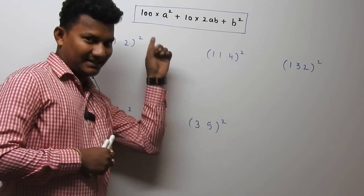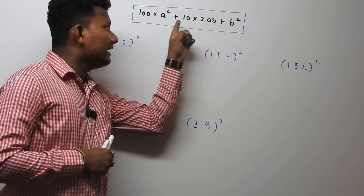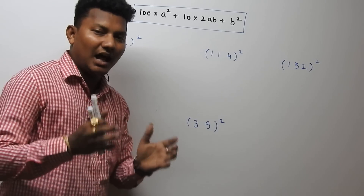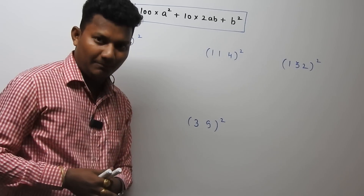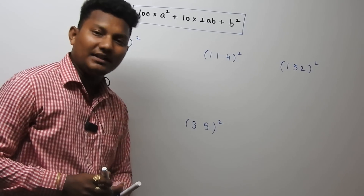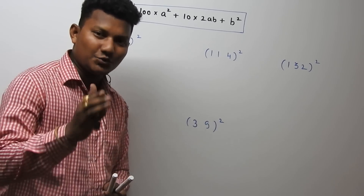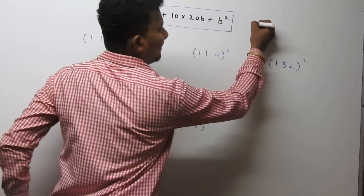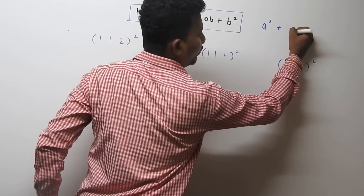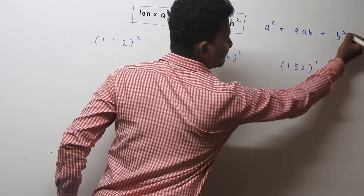The formula is 100·a² + 10·(2ab) + b². Now we will see how to apply this formula. As we all know, the expansion of (a + b)² equals a² + 2ab + b².